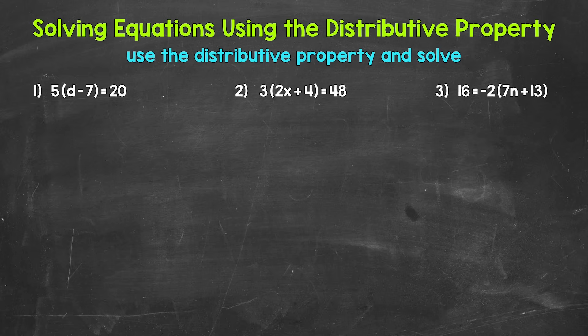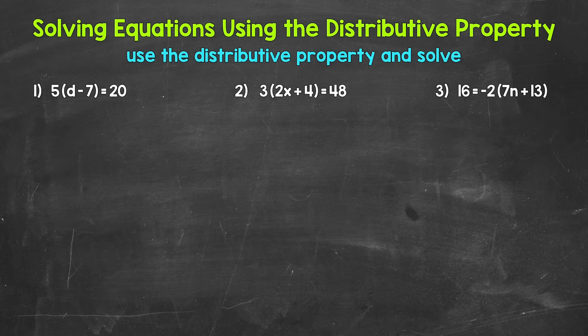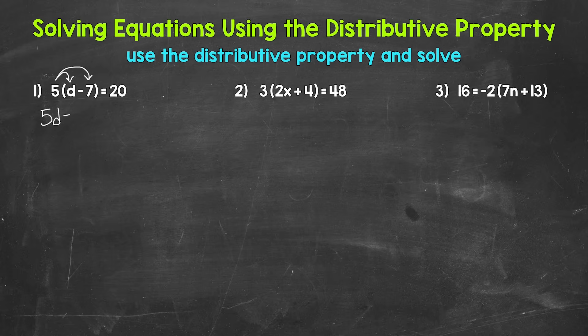Let's jump into number one, where we have 5(d minus 7) equals 20. One way we can solve this equation is to use the distributive property to remove the parentheses. We distribute whatever's on the outside of the parentheses to the terms inside. So here, we need to distribute 5 to d and negative 7. 5 times d gives us 5d, and 5 times negative 7 gives us negative 35. So we have 5d minus 35 equals 20.